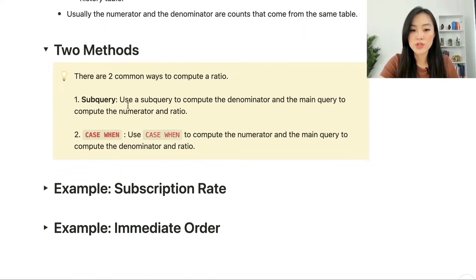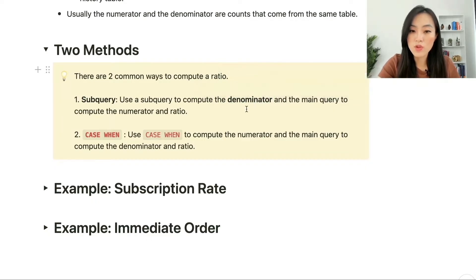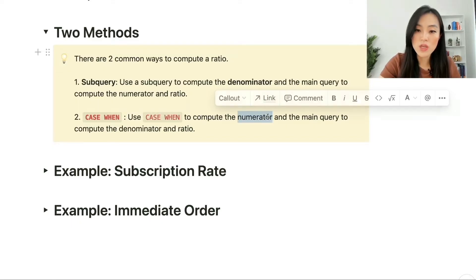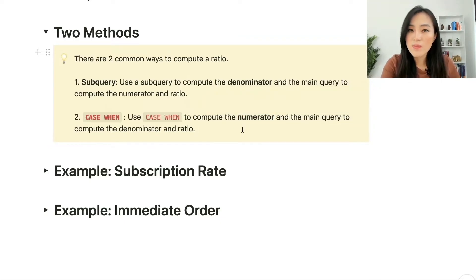To compute a ratio, there are two common methods. The first method is the subquery method — we use a subquery to compute the denominator and the main query to compute the numerator and the ratio. The second method is the CASE WHEN method — we use a CASE WHEN statement to compute the numerator and the main query to compute the denominator and the ratio.